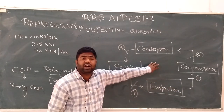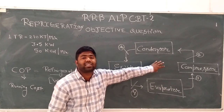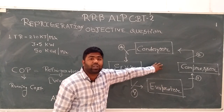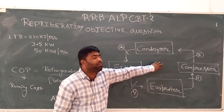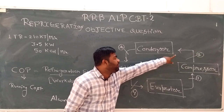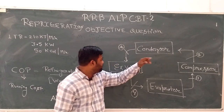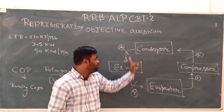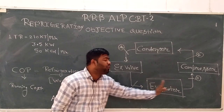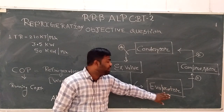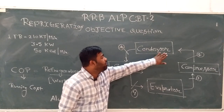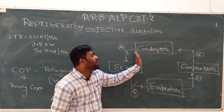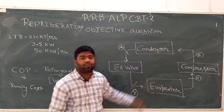The refrigerant in the system undergoes phase change: liquid to vapor is done by the evaporator, and vapor to liquid is done by the condenser.